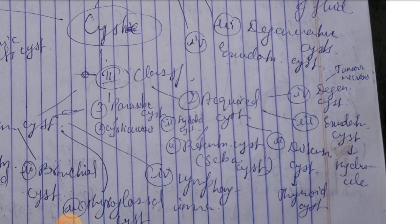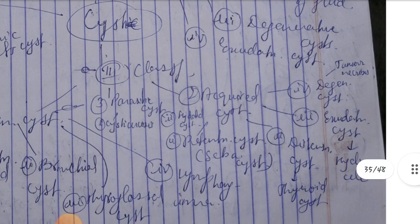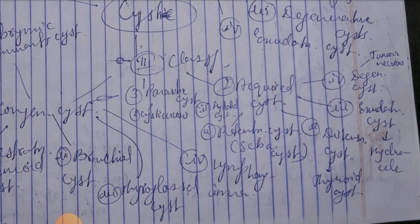Fourth, degenerative cysts: tumor necrosis. The acquired cysts, one is third parasitic: cysticercosis, hydatid cyst, echinococcus cyst, and Wuchereria cysts.